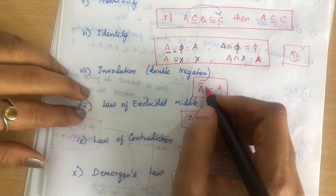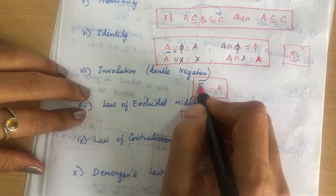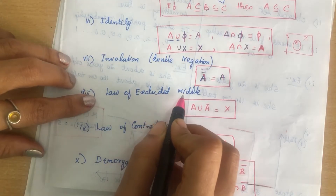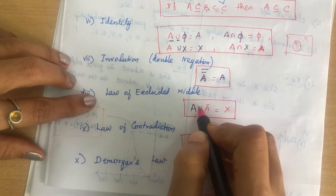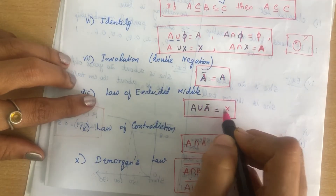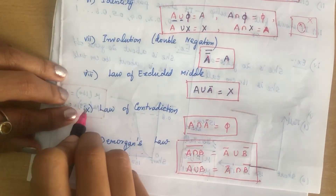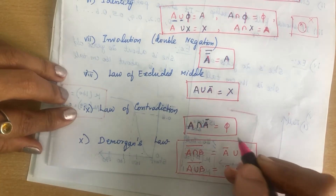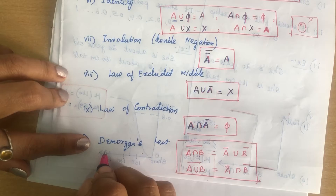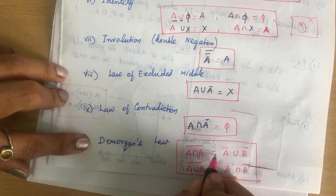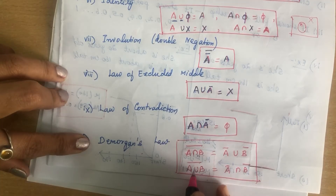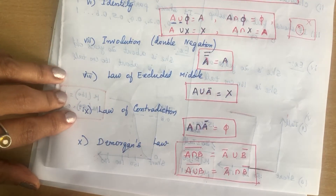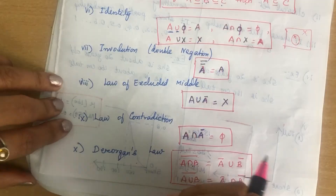Seventh is involution property: taking double complement cancels out, giving set A alone. Eighth is law of excluded middle: A ∪ Ā = X (the universal set). Ninth is law of contradiction: A ∩ Ā = φ (null set). Tenth is De Morgan's law: the complement of (A ∩ B) = Ā ∪ B̄, and the complement of (A ∪ B) = Ā ∩ B̄. These are the properties of crisp set, which you can use for solving problems.